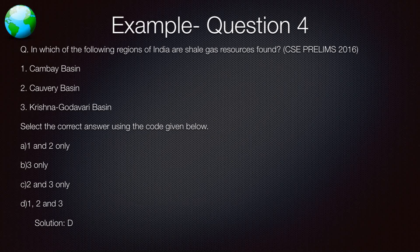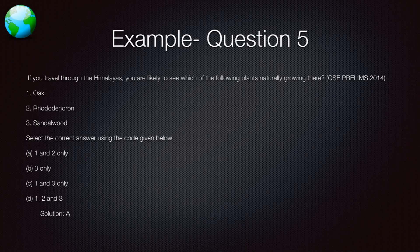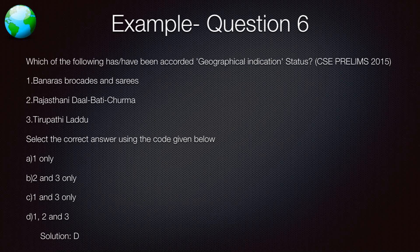Just reading The Hindu newspaper would have sufficed for that question. Another question asks which plants naturally grow in the Himalayas — you will not find sandalwood there, but oak and rhododendron are present. Then there are questions about geographical indication status — not only must you know which products have GI status, but also who grants it, its definition, legal sanctity, whether violations are penalized, and what commercial benefits it provides to local people.